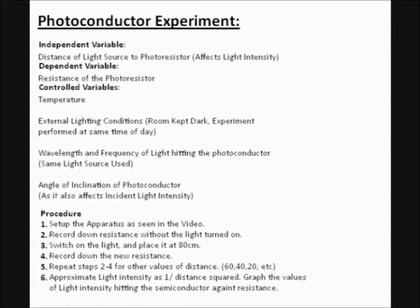The independent variable for this experiment was the distance of the light source to the semiconductor, which is inverse squared proportional to light intensity, and the dependent variable was the resistance of the photoconductor. I will now demonstrate how the experiment was carried out.